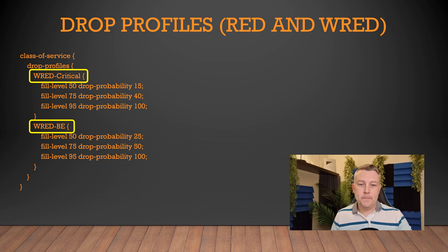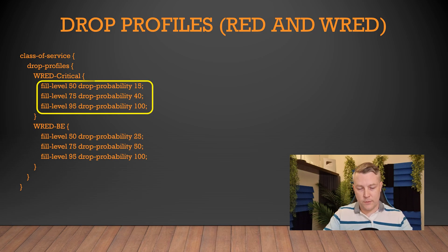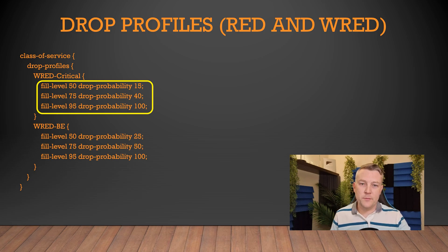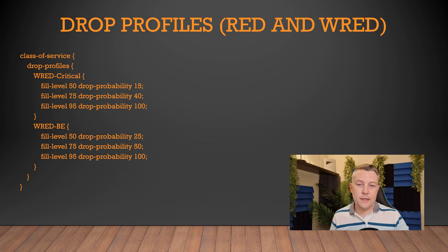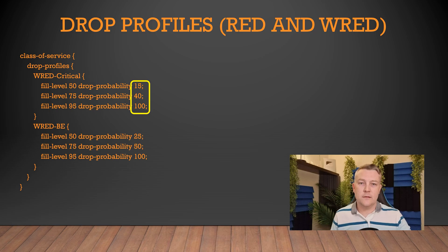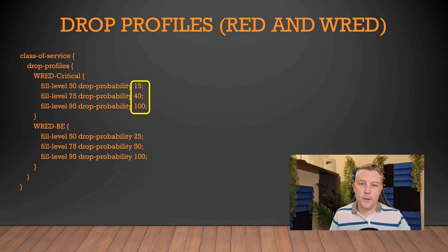For each drop profile, there are three thresholds, at least in the ones we've created here. These are set for when the queue is at 50% full, 75%, and 95% full. Each threshold then lines up to a drop probability, and this is a percentage — that is how likely it is to drop a particular packet when the queue is at that threshold.